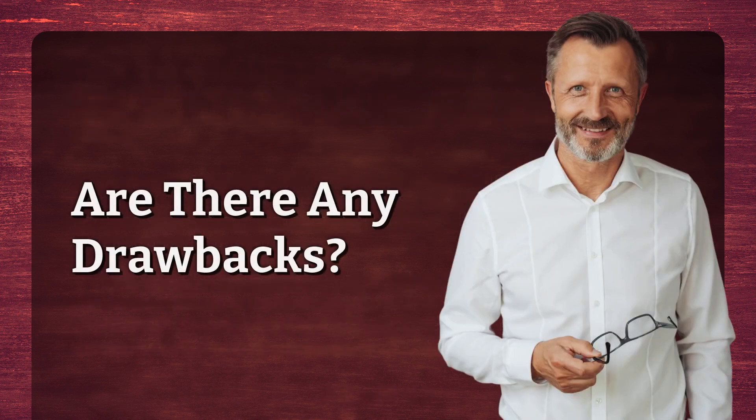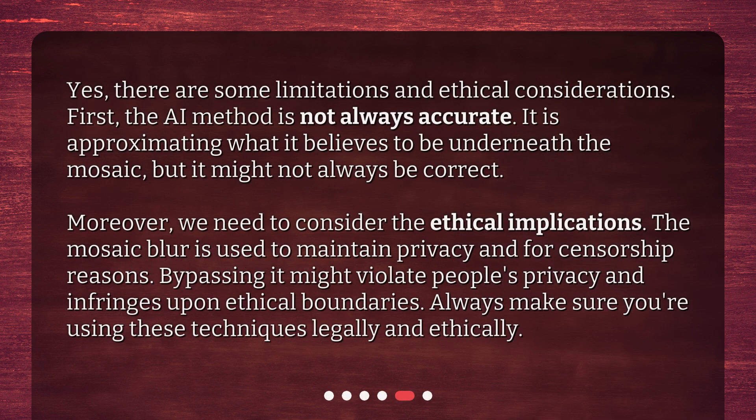Are there any drawbacks? Yes, there are some limitations and ethical considerations. First, the AI method is not always accurate — it is approximating what it believes to be underneath the mosaic, but it might not always be correct. Moreover, we need to consider the ethical implications. The mosaic blur is used to maintain privacy and for censorship reasons. Bypassing it might violate people's privacy and infringe upon ethical boundaries. Always make sure you're using these techniques legally and ethically.